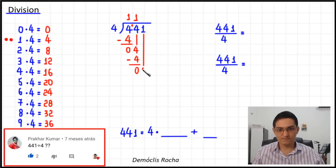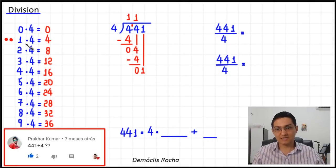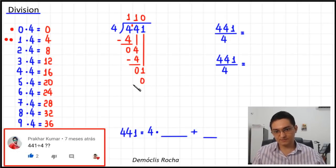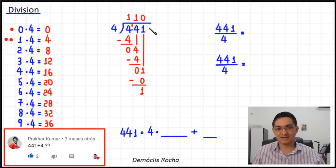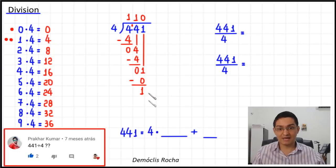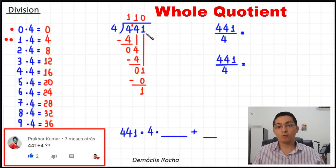After the subtraction, I bring down the next digit — in this case it is one. Now I ask: how many times does four go into one without going over? One times four is already too much, so the number we are looking for is zero. I write zero here, zero times four equals zero — I write it here, and then I subtract. One minus zero equals one. After this subtraction, I bring down the next digit, but there are no other digits to bring down.